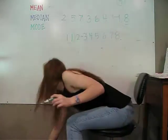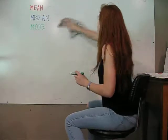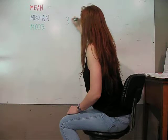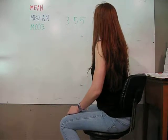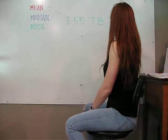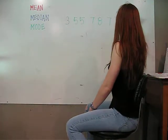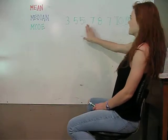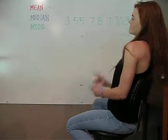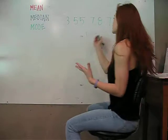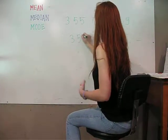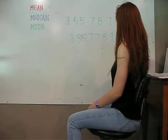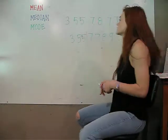Let's take a different set of numbers: 3, 5, 5, 7, 8, 7, 10, 9. You can put them in order again, just so you can see which numbers occur the most when they're next to each other.